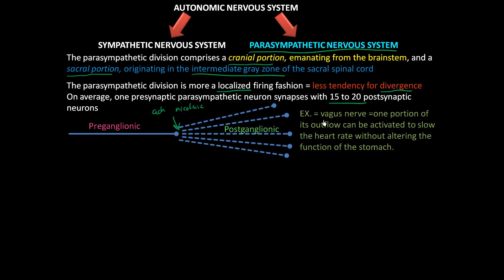An example of this is the vagus nerve. One portion of its outflow can be activated to slow the heart rate. If these two postganglionic neurons were to the heart and these two were to the stomach, you wouldn't want to fire the wrong one, because that would slow the heart rate and alter the function of the stomach. That's why there's less divergence in the parasympathetic nervous system compared to the sympathetic.